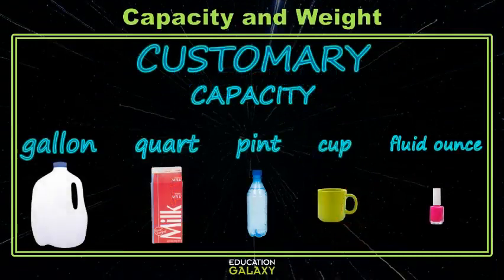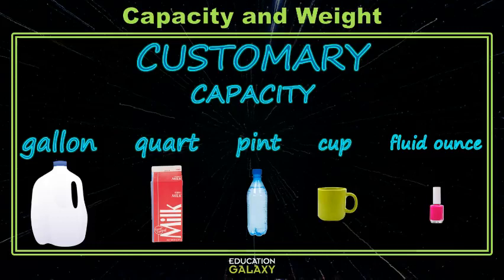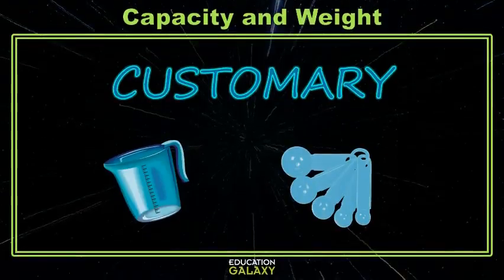In the customary system, we have a lot more units. On the larger end, gallons, and on the smaller end, fluid ounces. To measure these amounts, we can use tools like measuring cups and measuring spoons.